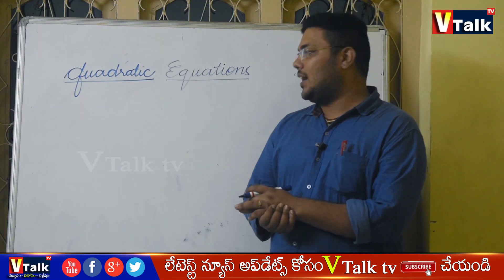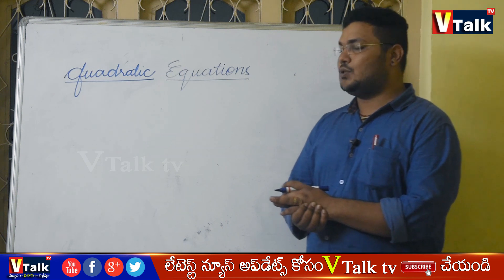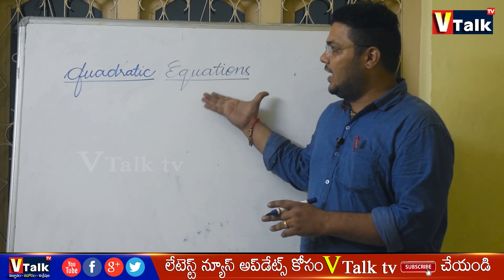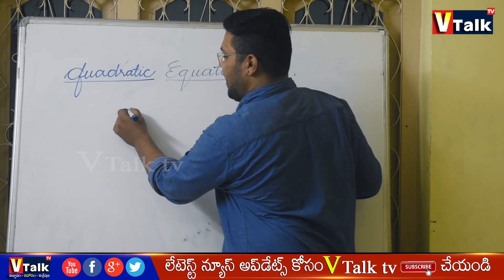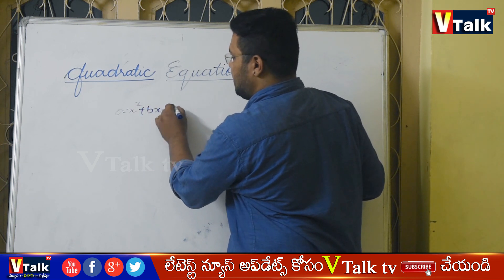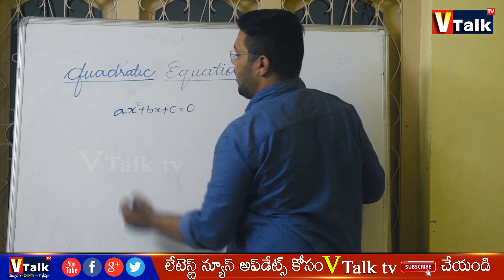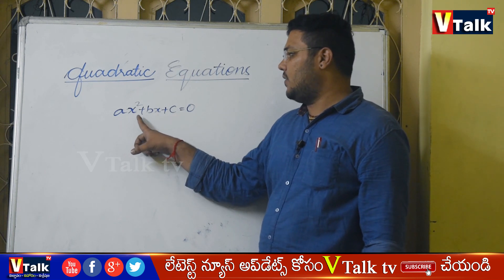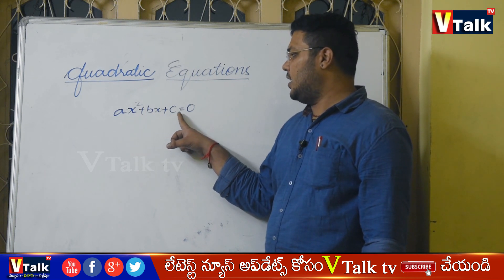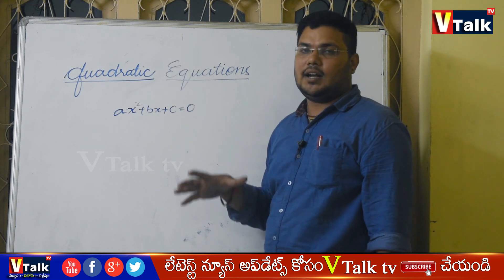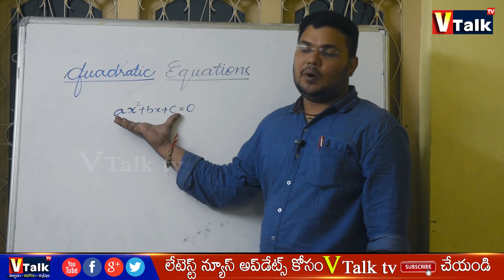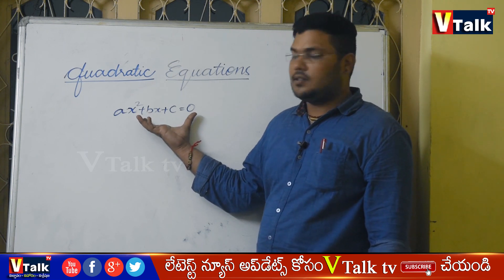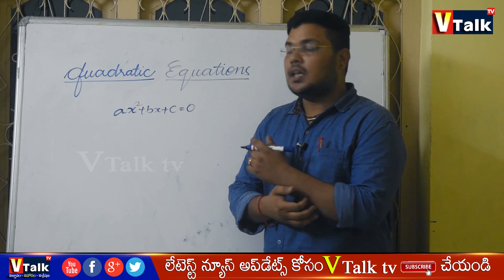Quadratic Equations. The equations which are in the form of AX squared plus BX plus C equal to 0 are called Quadratic Equations.